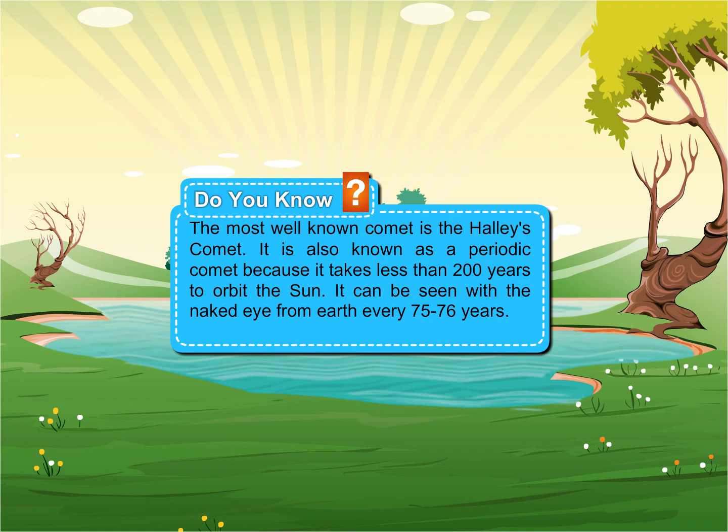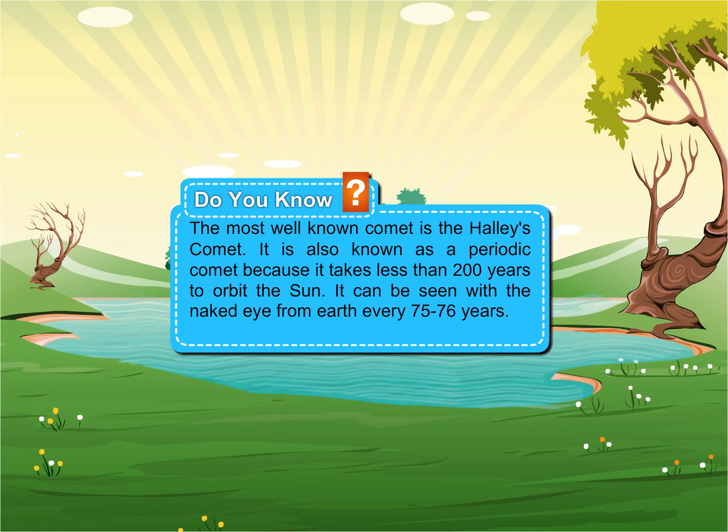The most well-known comet is the Halley's Comet. It is also known as a periodic comet because it takes less than 200 years to orbit the sun. It can be seen with the naked eye from Earth every 75 to 76 years.